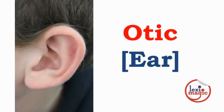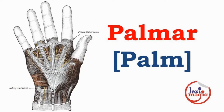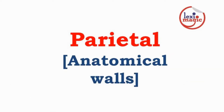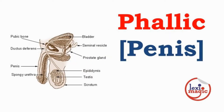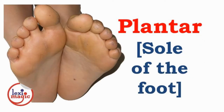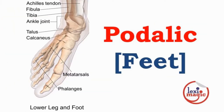Oortic refers to the ear. Palmar refers to the palm. Parietal refers to the anatomical walls. Peneal refers to the penis. Phallic refers to the penis. Plantar refers to the sole of the foot. Pedalic refers to the feet.